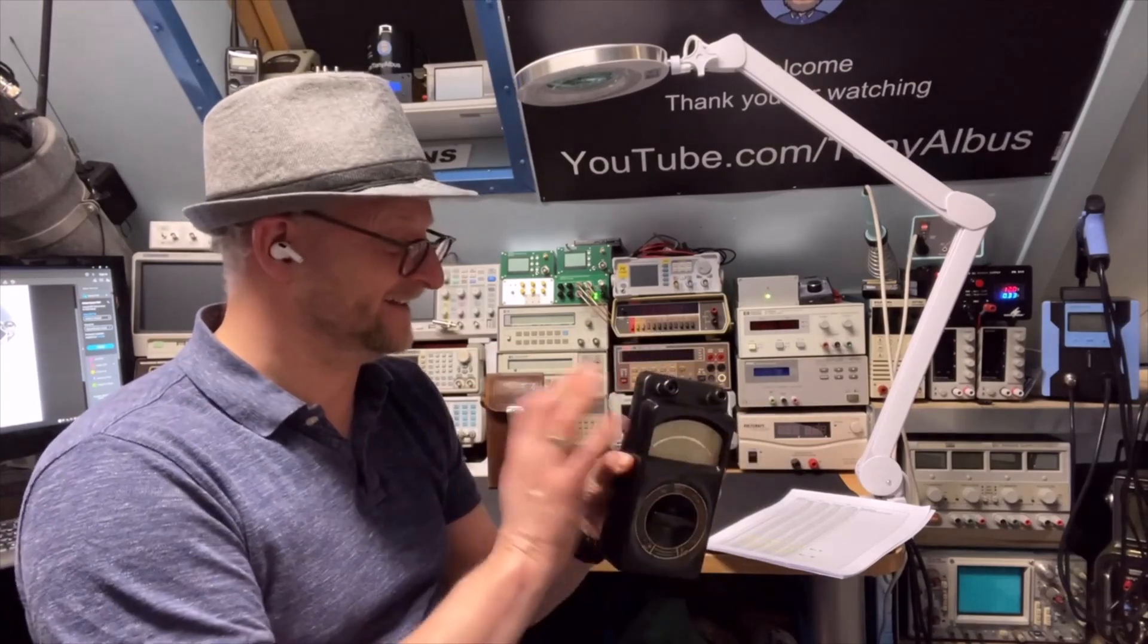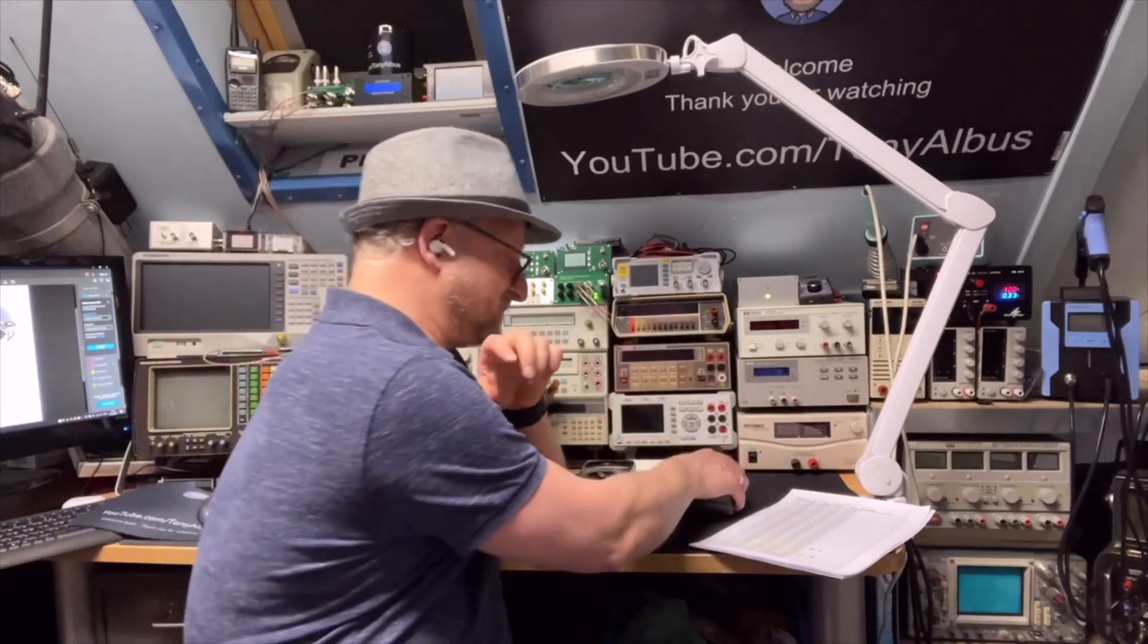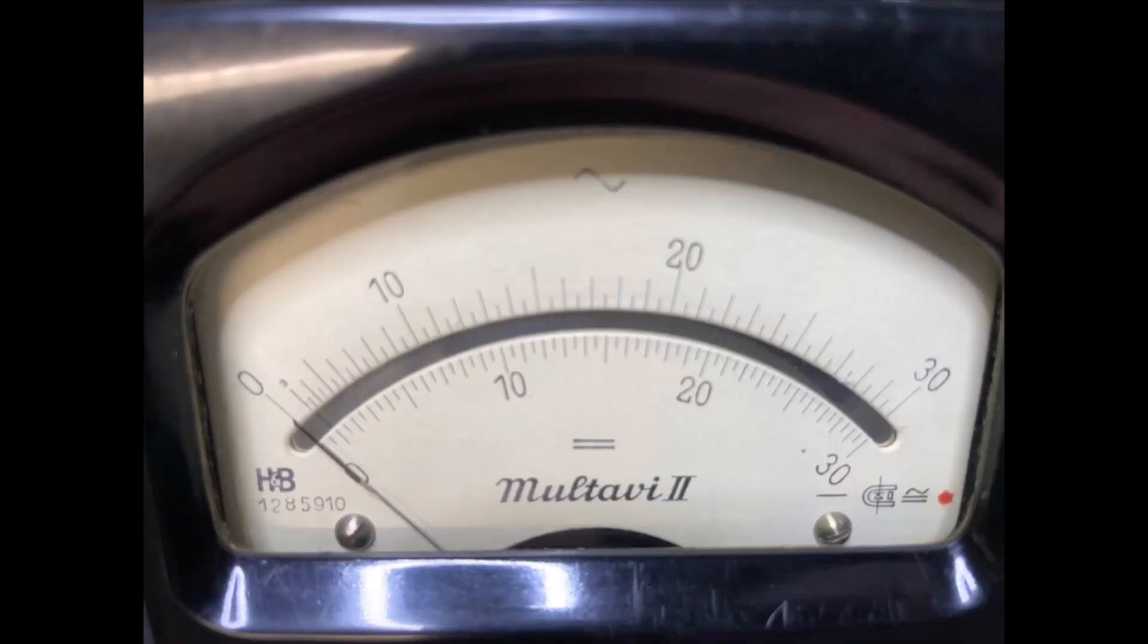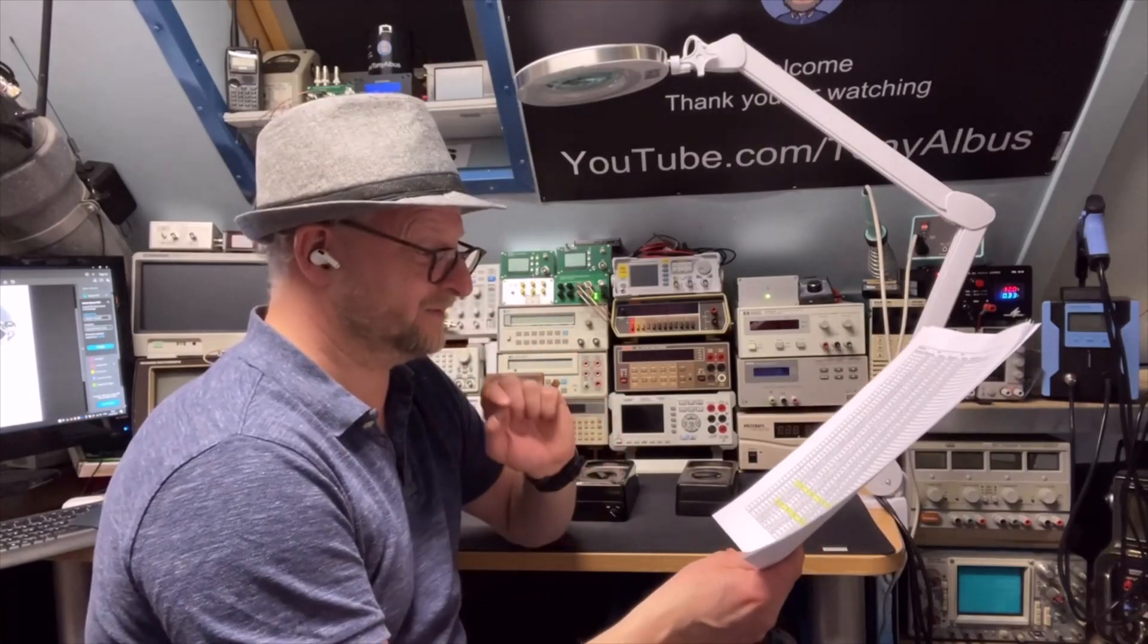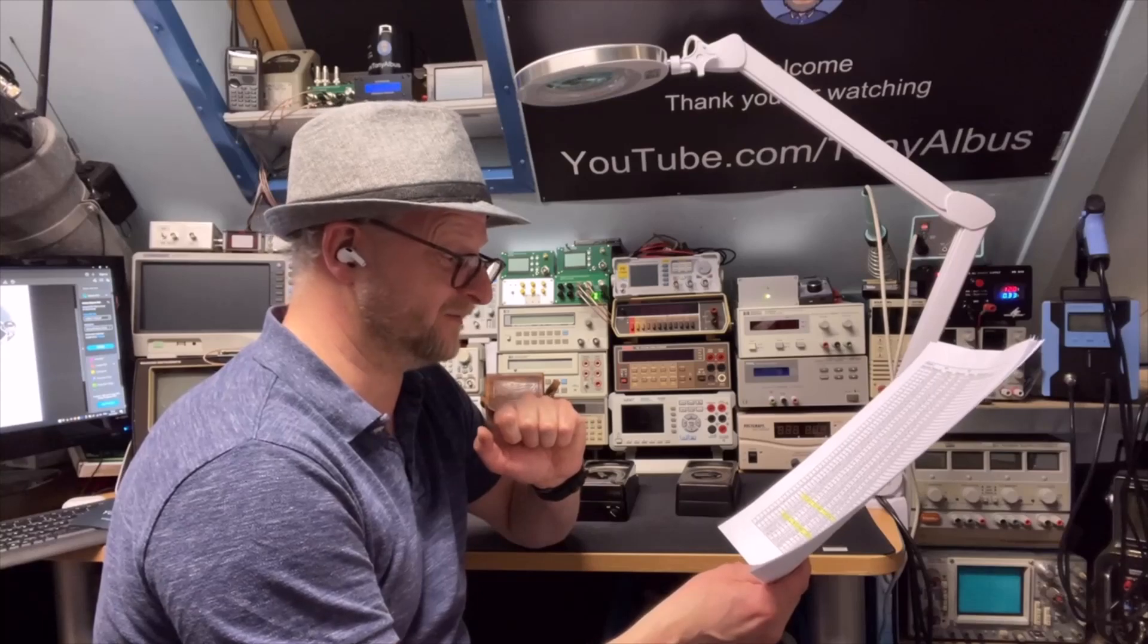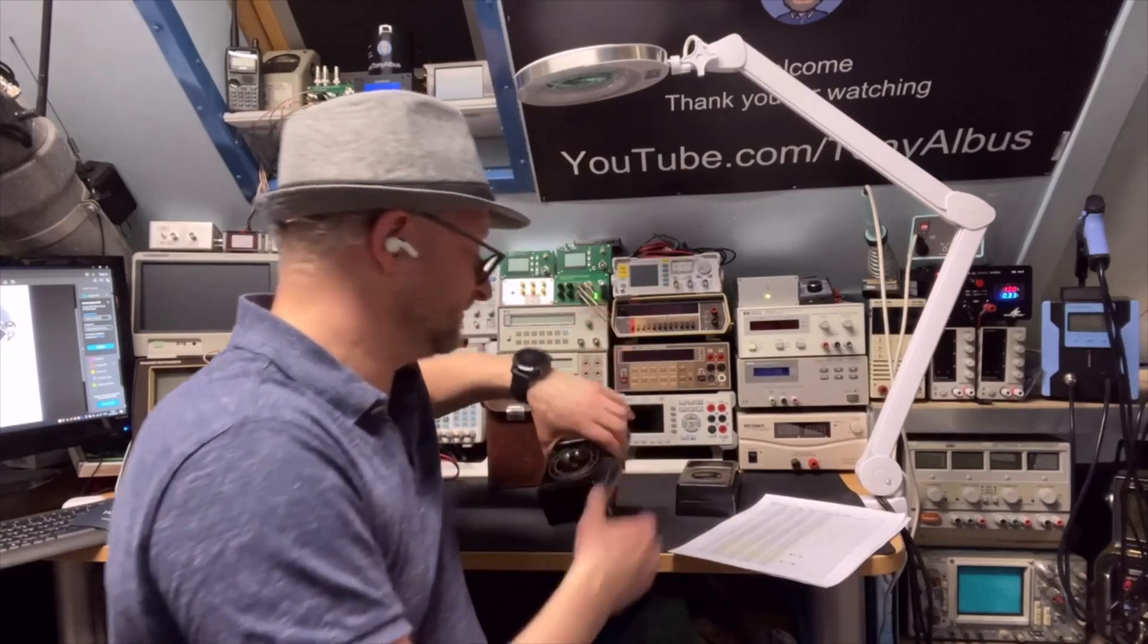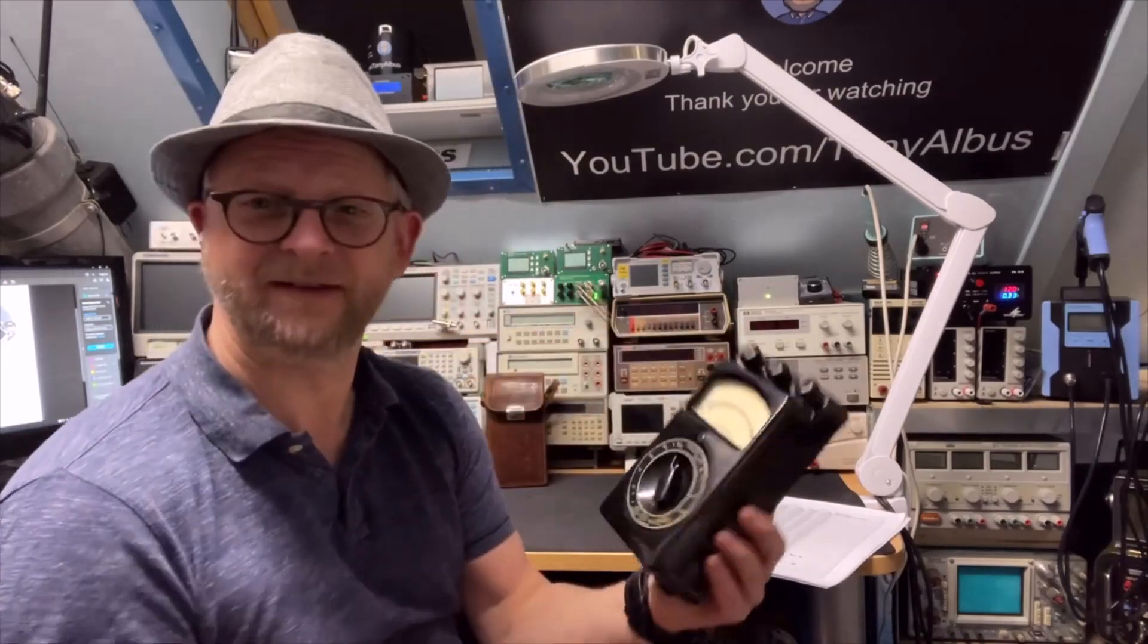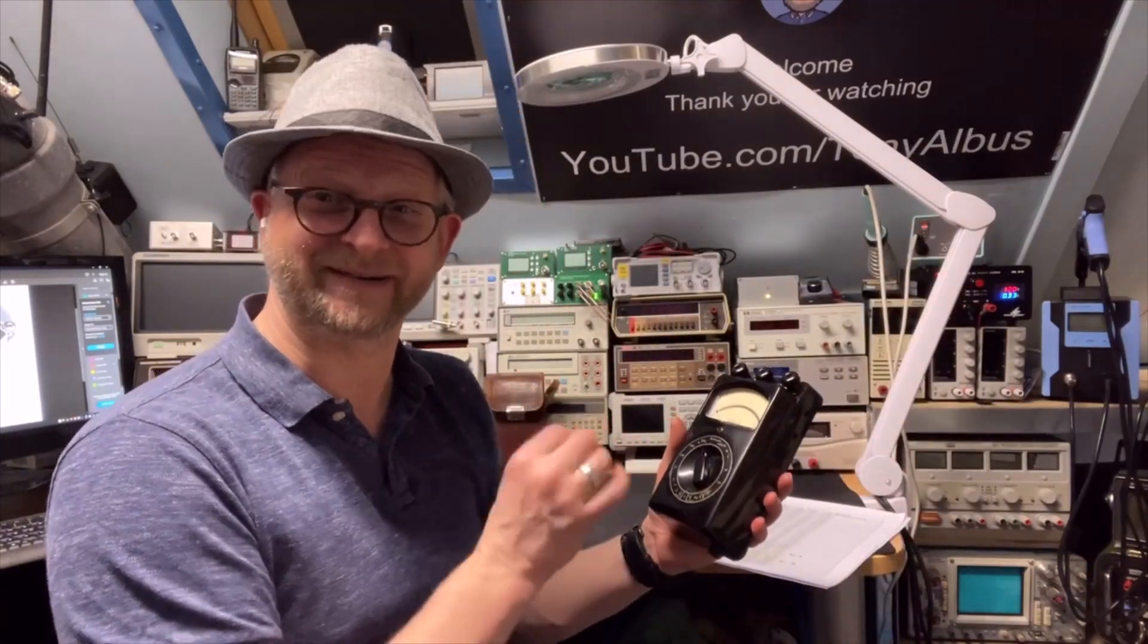And my other meter, this one is produced between December 35 and July 36. So well, 85. Look at it, it's still shiny. The Germans built a quality product there.